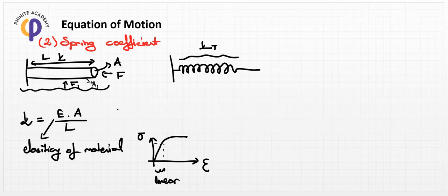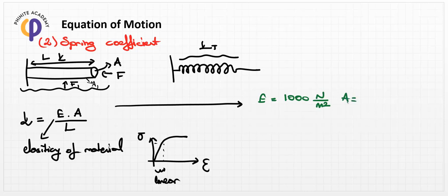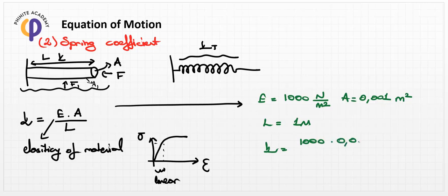As a real-life example, k can be calculated as follows. Let E = 1000 N/m², A = 0.001 m², and L = 1 m — these values are arbitrary. Then k = (1000 × 0.001) / 1, which equals 1 N/m.